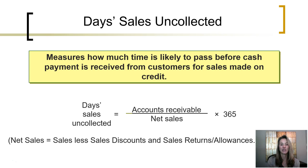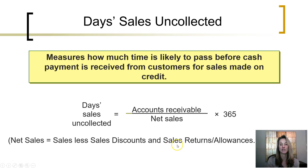It is calculated by taking accounts receivable and dividing by net sales. Recall that to calculate net sales, it is revenues or sales less the contra revenue accounts — sales discounts and sales returns and allowances.